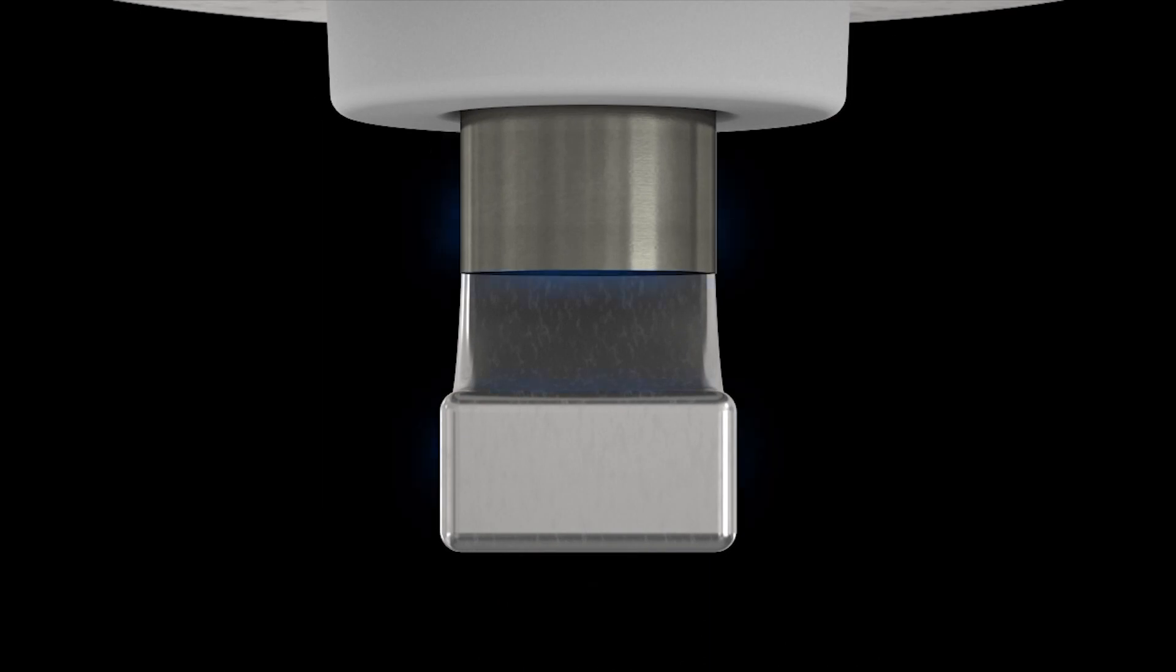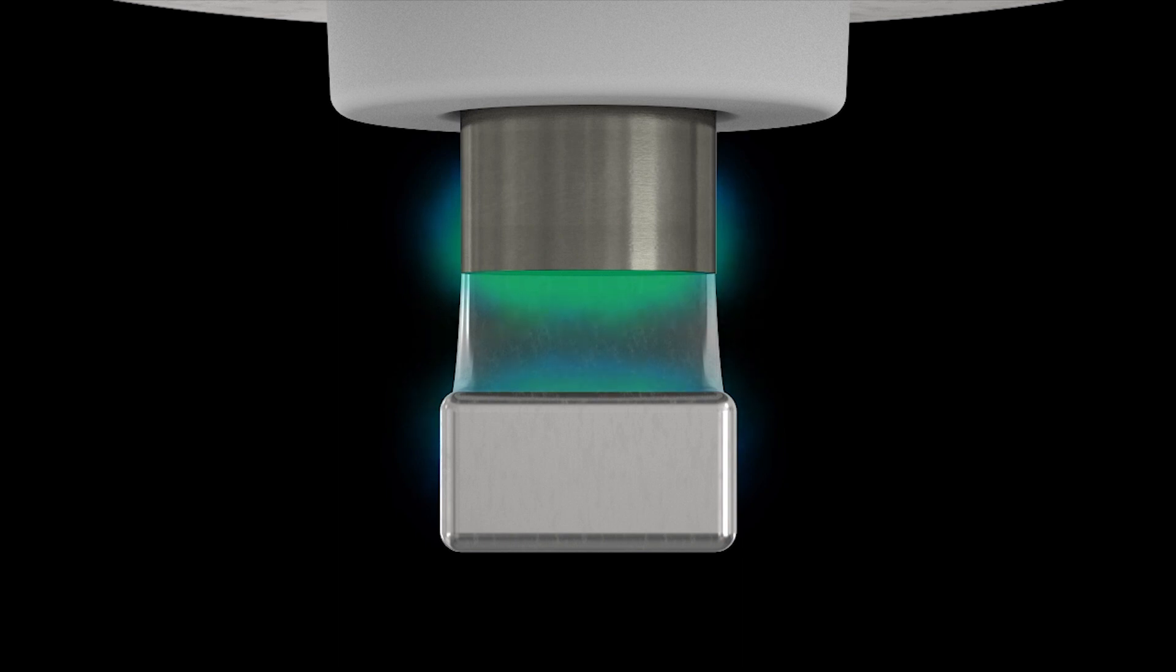To create the spark, a high voltage is supplied by the ignition coil. And as the voltage increases, the air between the electrodes, which is normally insulating, now becomes ionized to conduct electricity.